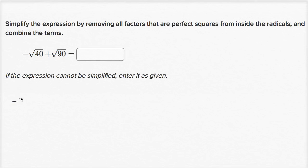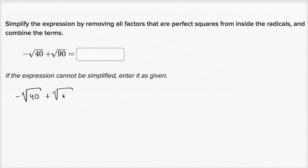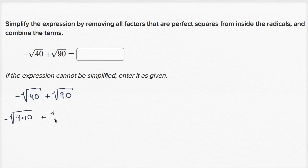So we have the negative square root of 40 plus the square root of 90. Let me write a little bit bigger so you can see that. So what perfect squares are in 40? What immediately jumps out at me is that it's divisible by 4, and 4 is a perfect square. And for 90, what jumps out is that it's divisible by 9. 9 is a perfect square.